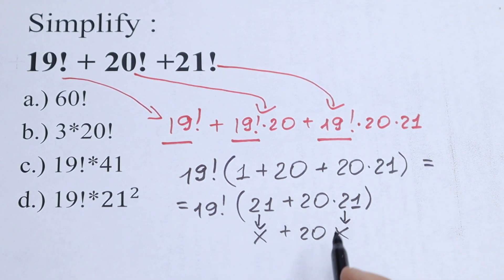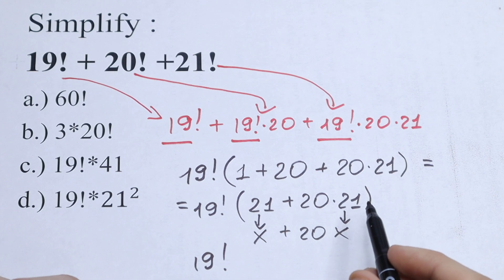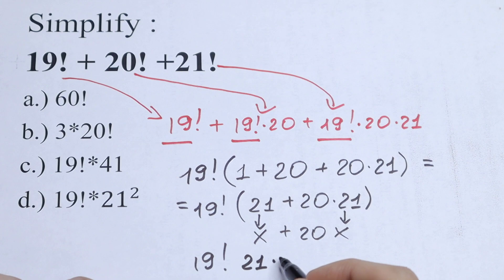So if you don't know how to add all of this, as a result we will have 19 factorial, we will have 1 times 21 and plus 20 times 21. So as a result we will have in our parentheses 21 times 21.